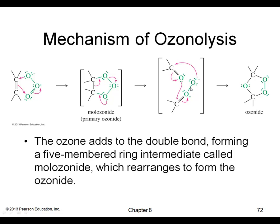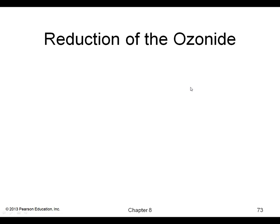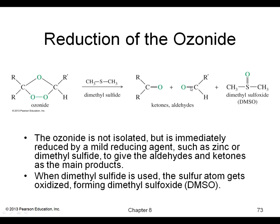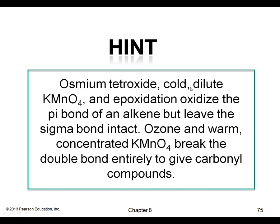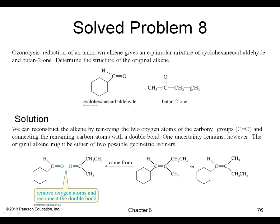Here's a retrosynthesis problem: if you did an ozonolysis reaction and found two carbonyl-containing products, to determine the original alkene you simply join the two carbonyl carbons with a double bond. These would be the two possible starting alkenes.